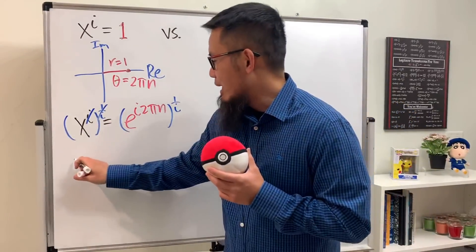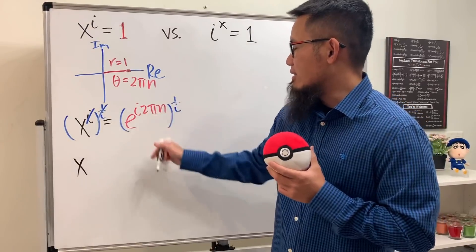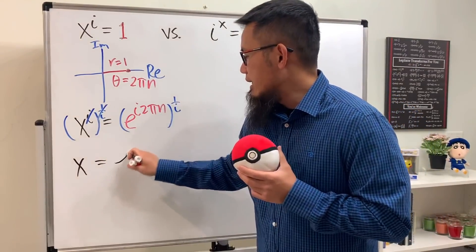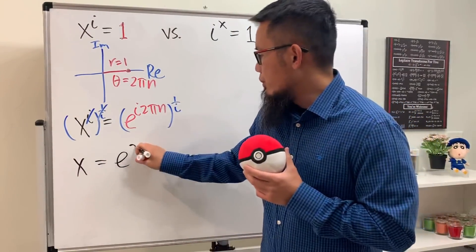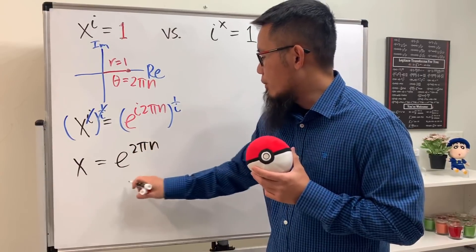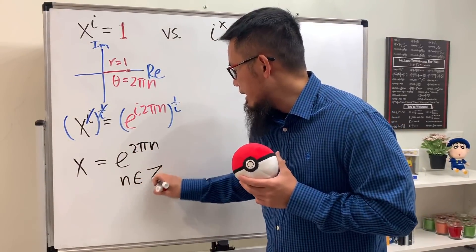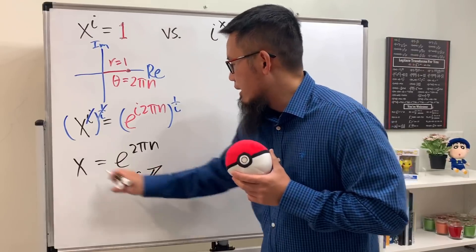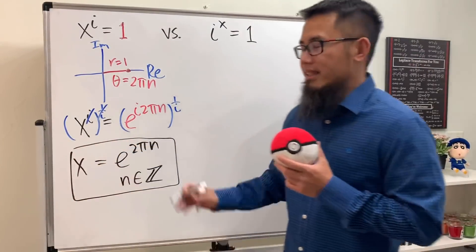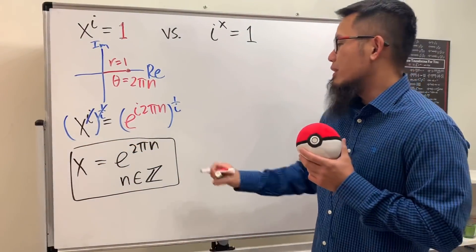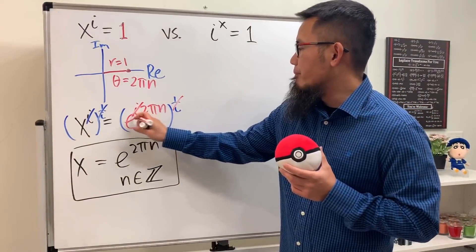On the left-hand side we have x. On the right-hand side, the i's cancel, so we just get e to the 2πn power, where n is an integer. This right here is the answer for the first equation.